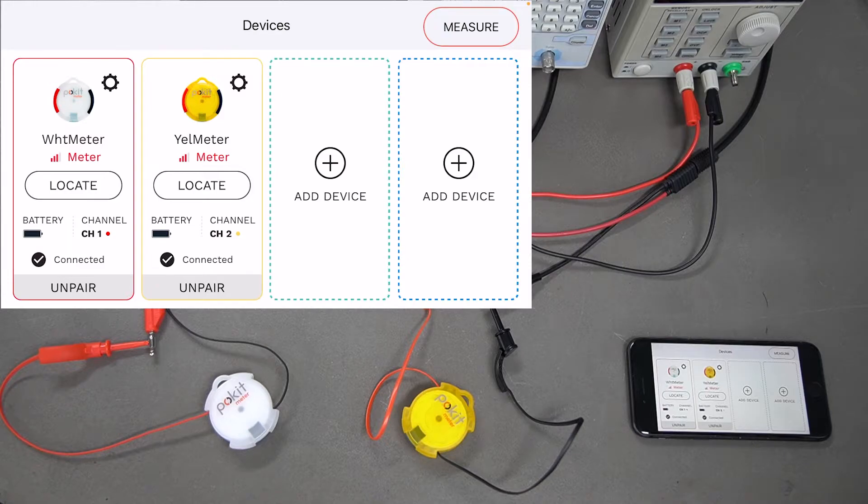In today's user guide, we'll be taking a look at how to measure current in the pocket meter's multimeter function. We've got two pocket meters connected here, a white and a yellow, as you can see on the device's screen.